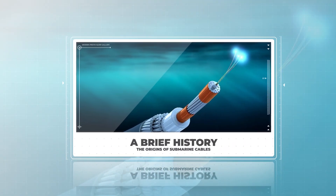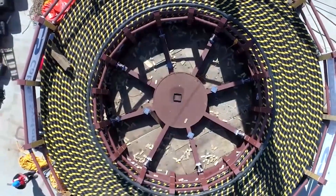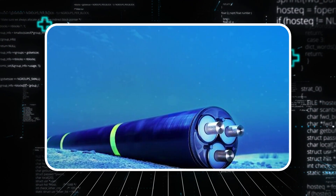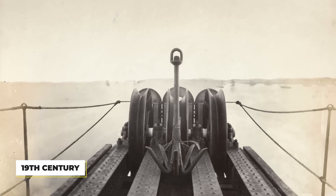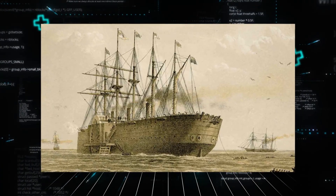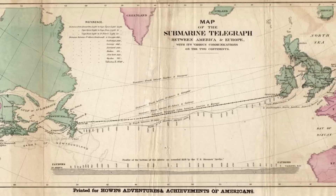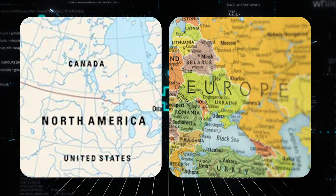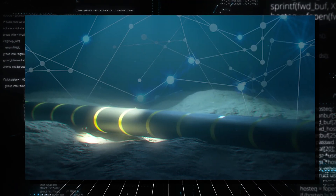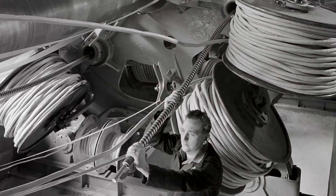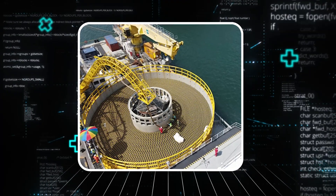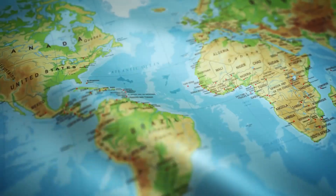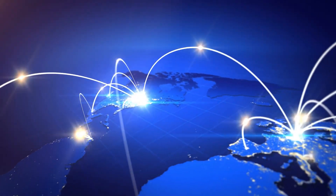A Brief History: The Origins of Submarine Cables. Before exploring the complexities of modern submarine cables, it's worth considering their historical origins. The story of submarine cables began long before the digital age — it traces back to the 19th century when telegraph cables were laid across oceans to facilitate long-distance communication. The first successful transatlantic telegraph cable was completed in 1866, connecting North America to Europe. Back then, these cables carried simple electrical signals that transmitted telegraph messages. Today's cables carry vast amounts of digital data through fiber-optic strands, but the basic concept remains the same: a physical connection between continents enables faster communication. This historical foundation laid the groundwork for the internet as we know it today, transforming the way nations interacted and giving rise to the global communications network we now rely on.